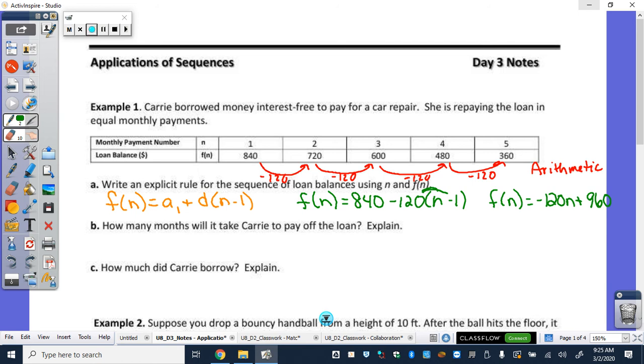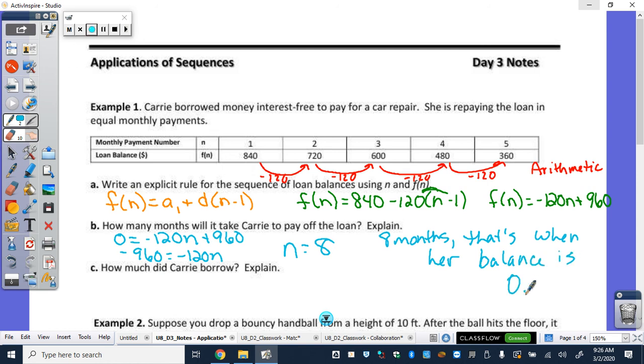So how many months will it take for Carrie to pay off the loan? So we're looking for her to pay off the loan. How do we solve that algebraically? Set it equal to 0. So 0 equals negative 120n plus 960. So I subtract my 960 over to try to get n by itself. Divide by negative 120, and what do we get? 8. So it's going to take her 8 months. That's when her balance is 0. We had to explain, so that's why we had to write a little bit of a sentence there. Explain always means sentence.